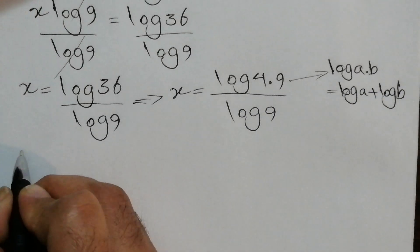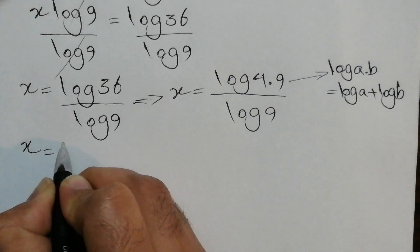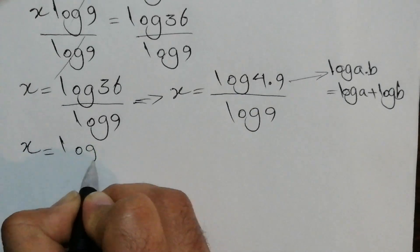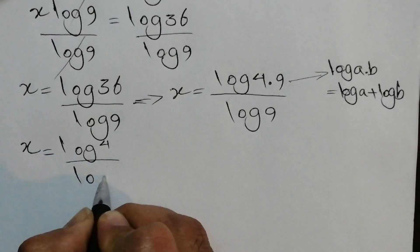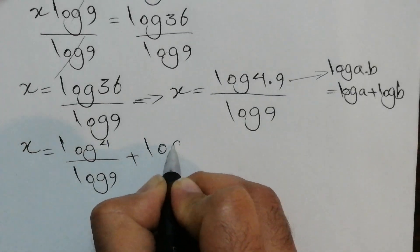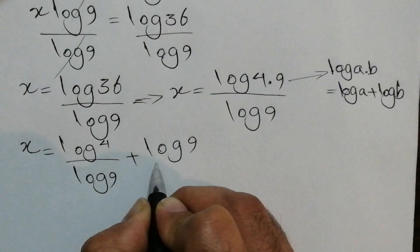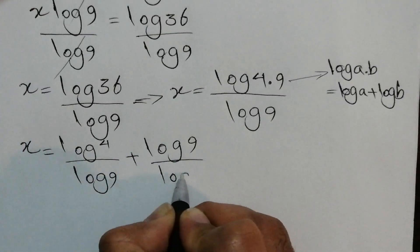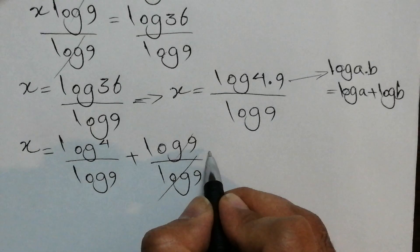So we know that x equals log 4 over log 9 plus log 9 over log 9. So this is 1.